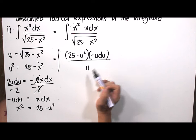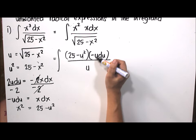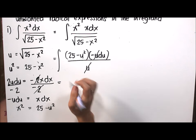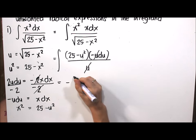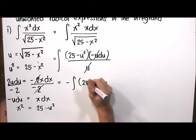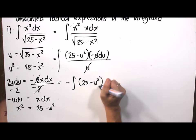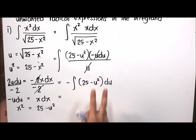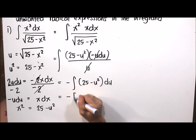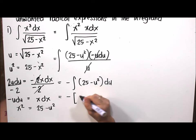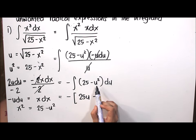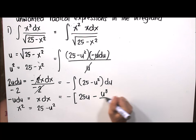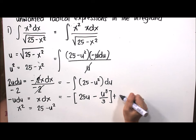The integral becomes the quantity 25 minus u squared times negative u du all over u. The u terms cancel, and we factor out the negative sign, leaving us with the integral of 25 minus u squared du. By basic integration, we get negative of 25u minus u cubed over 3, plus C.